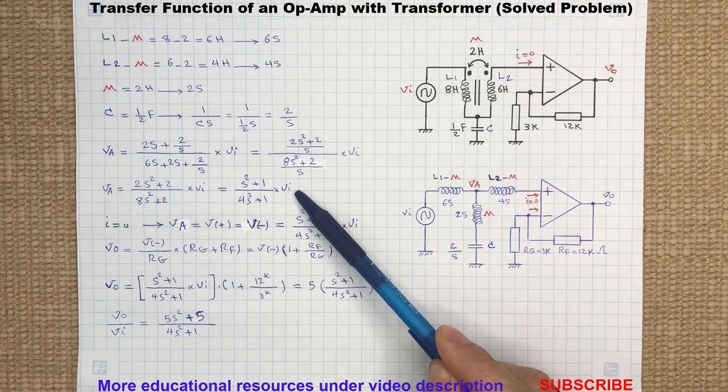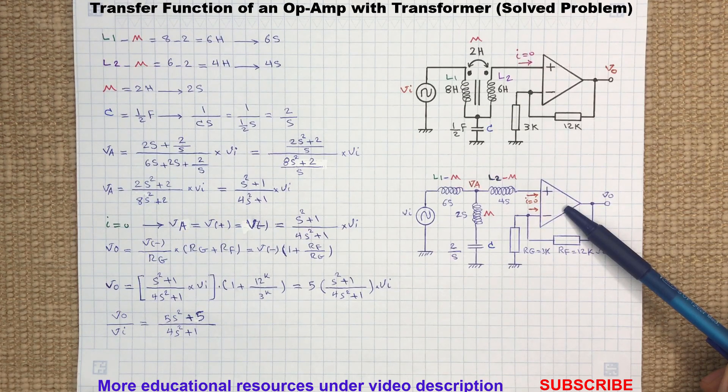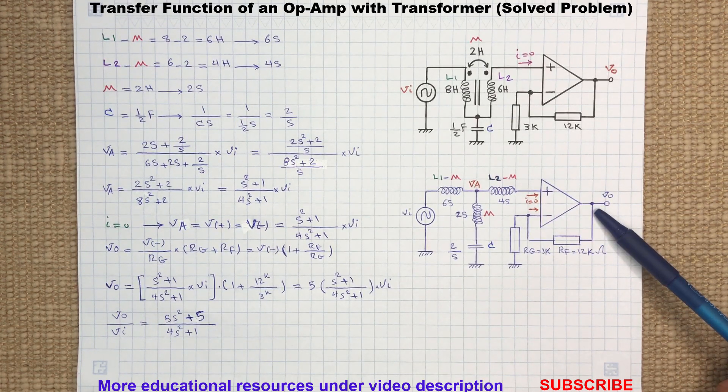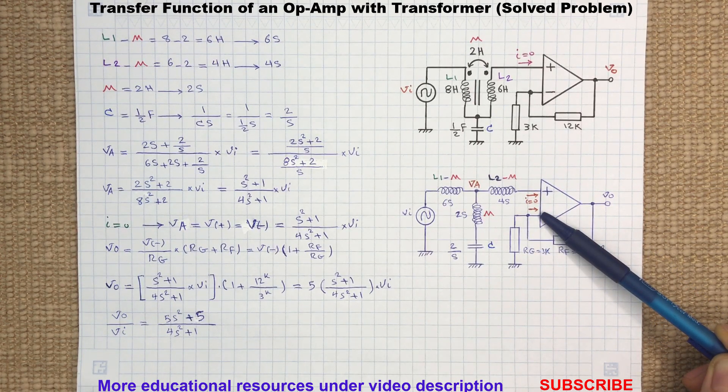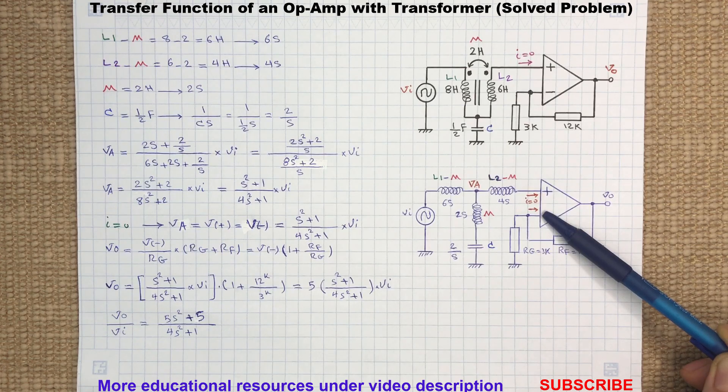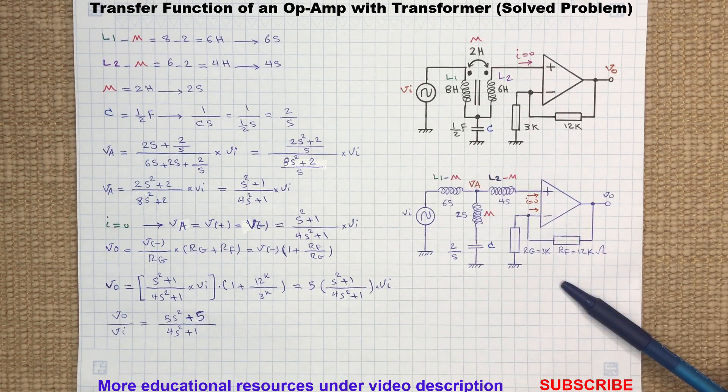Because of the op-amp's very high open loop voltage gain and having feedback from the output to the inverting terminal, we can consider both the non-inverting and inverting terminals are at the same potential and both are at the same voltage level as node A.